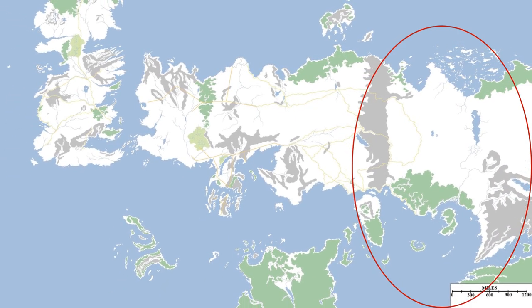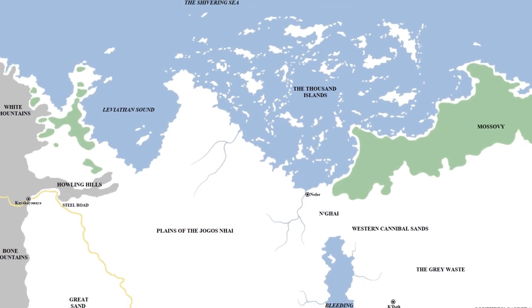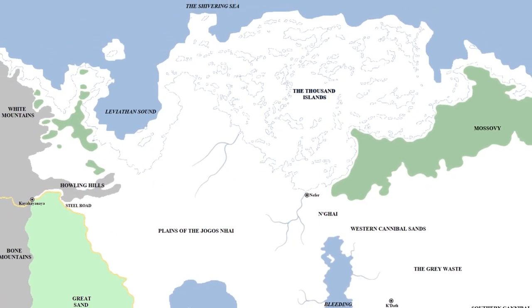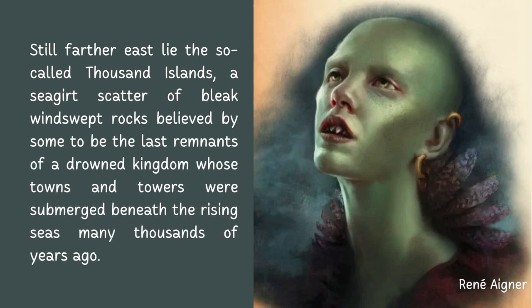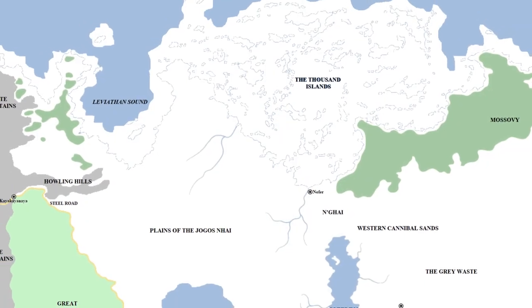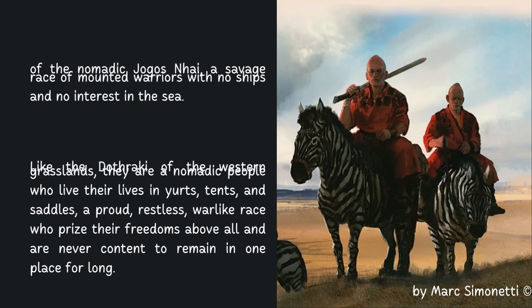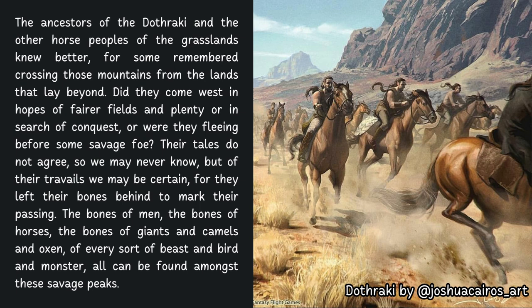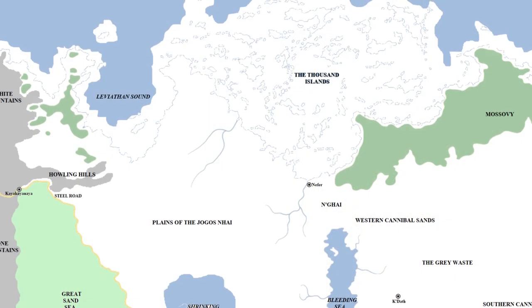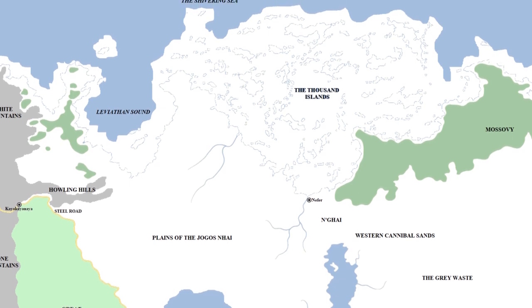In the north we have the Thousand Islands, where we can say with fair certainty there was an area that sunk pretty much completely. Still farther east lie the so-called Thousand Islands — a sea-girt scatter of bleak wind-shaped rocks believed by some to be the last remnants of a drowned kingdom whose towns and towers were submerged beneath rising seas many thousands of years ago. So the area was a very flat one and the extension of the plains of the Jogos Nhai. The Jogos Nhai are a nomadic people who live in yurts, tents, and saddles — a proud warlike race who prize freedom above all and are never content to remain in one place for long. The ancestors of the Dothraki came from the lands beyond the Bone Mountains, living behind the bones that give the mountains their name. They are also nomadic with no tradition of settlements, so all these people were living in the huge flat area east of the Bones. The Dothraki migrated at some point, and one major reason was this area drowning.